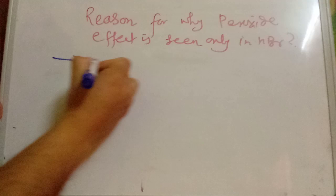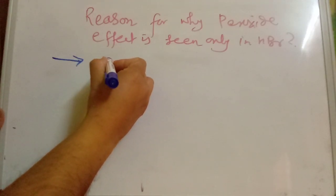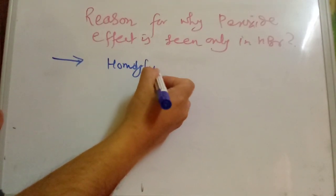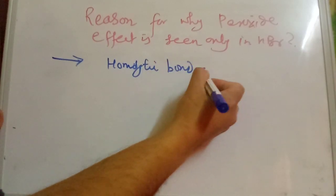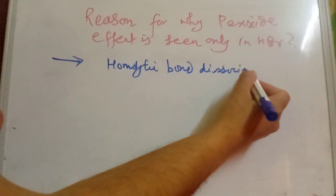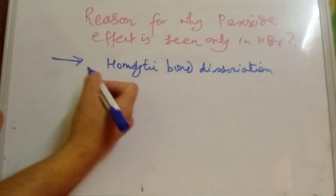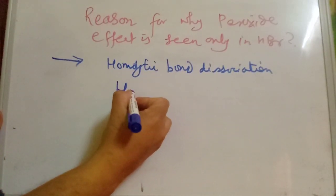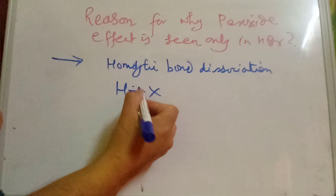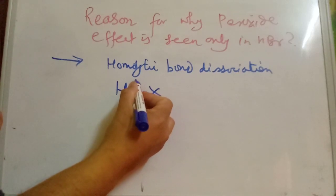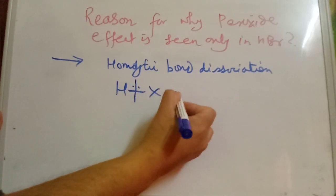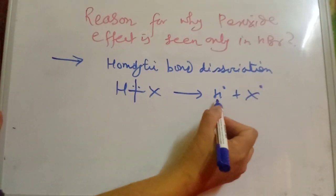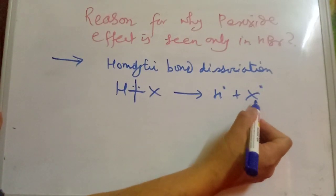If you have a peroxide effect, I'm going to talk about homolytic bond dissociation. If you have homolytic bond dissociation of a hydrogen halide — a covalent bond — then the covalent bond undergoes homolysis, giving H• plus X•. These are hydrogen radical and halogen radical respectively.